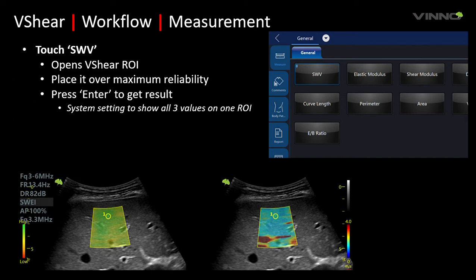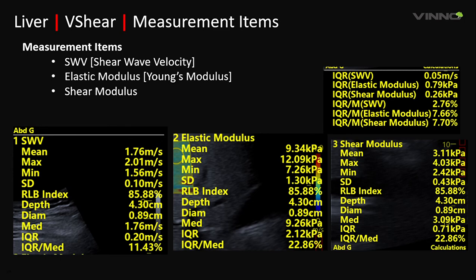Choose the measurement tab on the touch screen and touch the shear wave velocity measurement. A cursor opens — position it over the maximum reliability area and the system will display the measurement result. The system shows the shear wave velocity in meters per second, elastic modulus and shear wave modulus in kilopascals, and all statistics including maximum, minimum, standard deviation, mean, depth at which the ROI was placed, diameter of the measurement ROI, and the reliability index. Adapting to international guidelines, it shows the median value and the IQR/median ratio as per the SRU guidelines, which recommend obtaining three to five measurements with an IQR/median ratio less than 15% for shear wave velocity and less than 30% for elastic modulus.